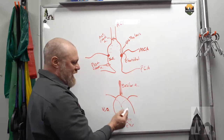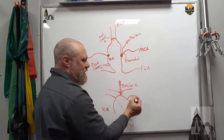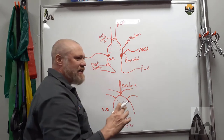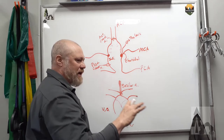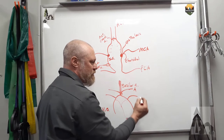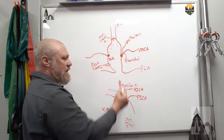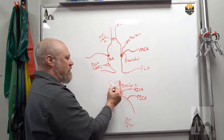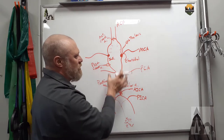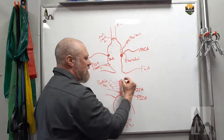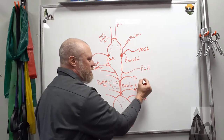The vertebral arteries join in the center and form a really thick artery called the basilar artery. Right after it forms from the convergence of the vertebral arteries, it's going to give off some branches. These two are going to supply the inferior portion of the cerebellum — one supplying the anterior portion of that bottom half and one supplying the posterior portion. So they're known as the anterior inferior cerebellar artery and the posterior inferior cerebellar artery. The basilar artery is on the surface of the pons, so it gives off a bunch of little pontine arteries.